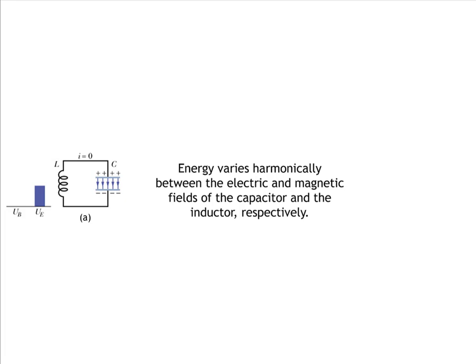When the charge on the capacitor is at a maximum, there is zero current flowing in the circuit. Notice the polarization: positive charge on the top plate, negative charge on the bottom plate, and the electric field pointing from positive to negative. The energy bar graph shows that all potential energy is in the form of electric potential energy at a maximum. At time t equals zero, the capacitor then discharges, and as it does, the current in the circuit increases.